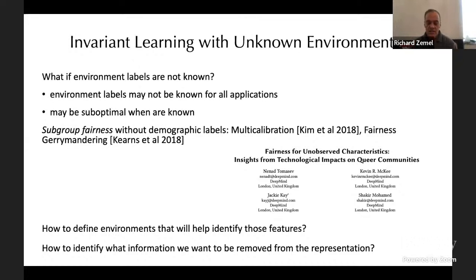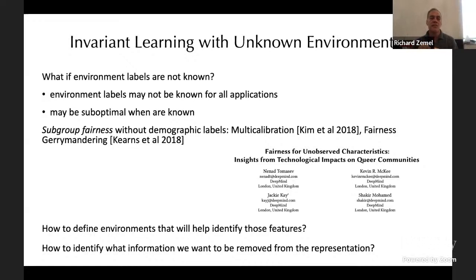Now I want to focus on a key problem: what happens if we don't know the environment variables or labels? We want to remove information but don't know what information to remove. This comes up in fairness too — if you think of environment labels as equivalent to sensitive attributes, you're partitioning inputs into different groups. In fairness, there's been recent work on subgroup fairness where you don't have access to the demographic attributes. Two studies — multi-calibration and fairness gerrymandering — address this. An example is the queer community, where sensitive attributes may not be observable.